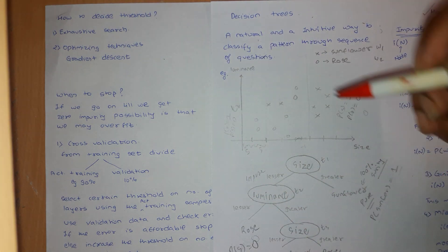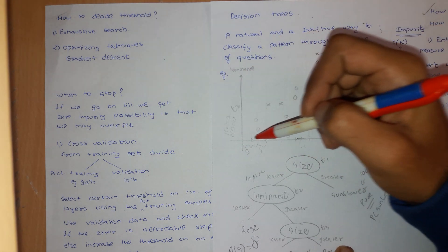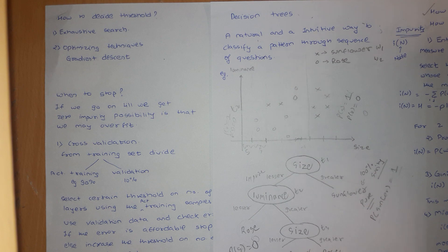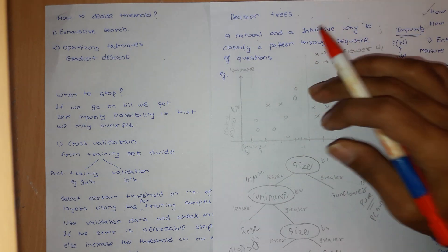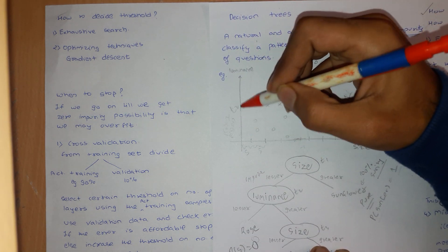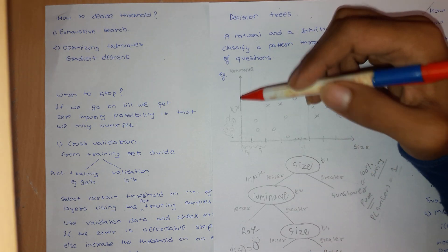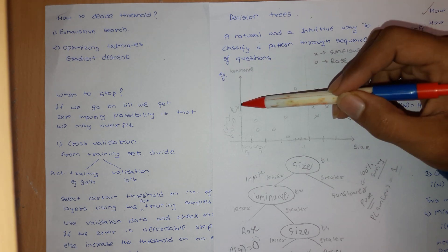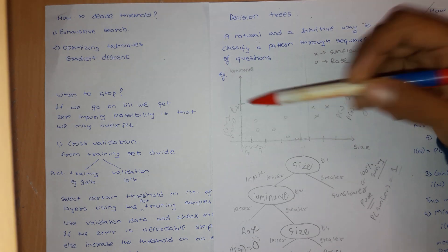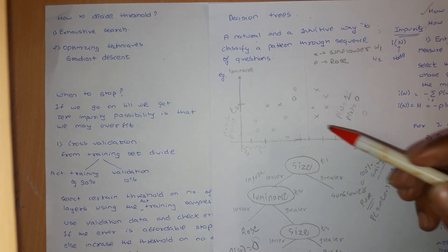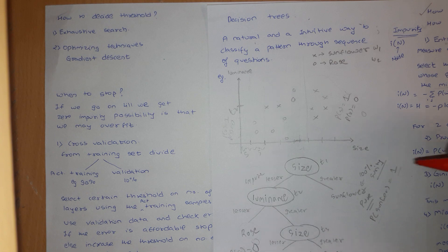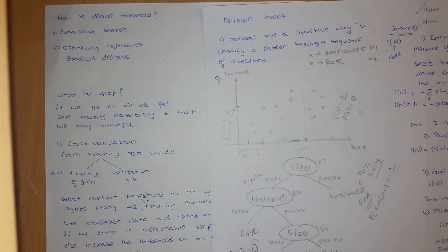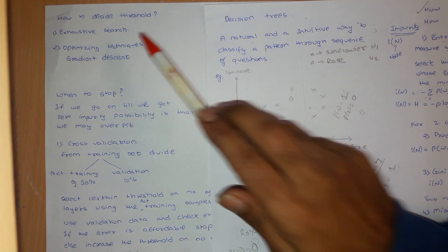For the feature 'size' you take step increments and check how much impurity you are getting, storing the position of minimum impurity. Then do the same process with 'luminance' — check where luminance gives you minimum impurity. Once you have the minimum impurities for both size and luminance, check which is lower. If size gives the minimum, choose size as your node feature with that threshold value.